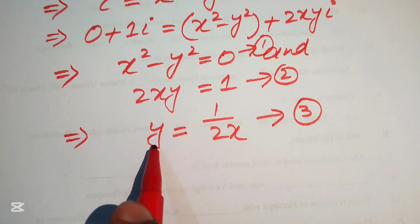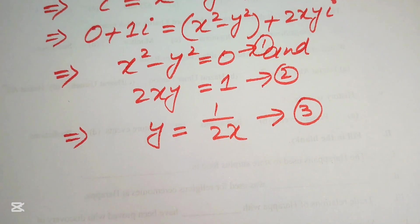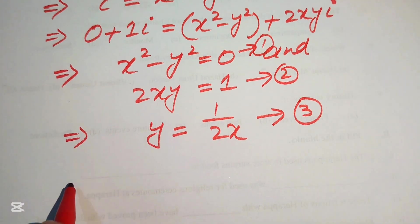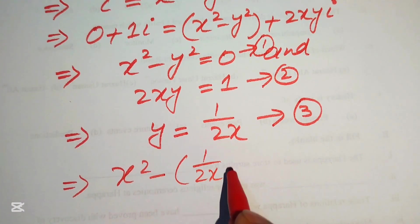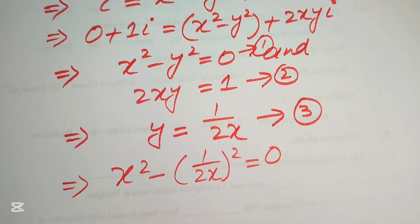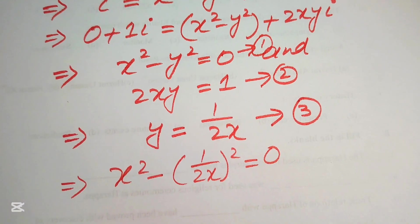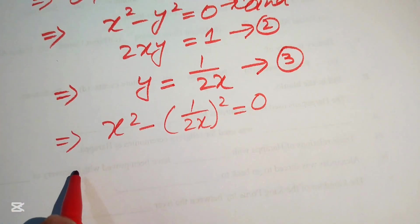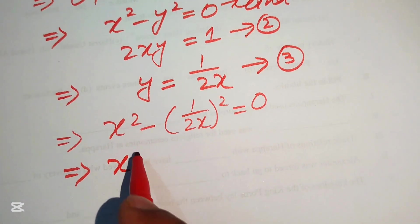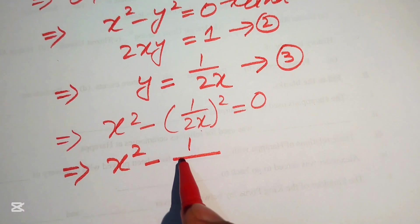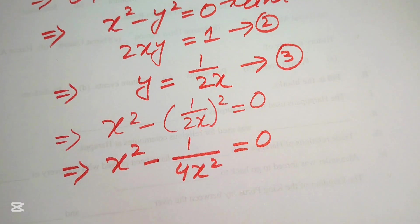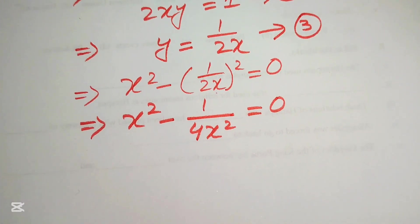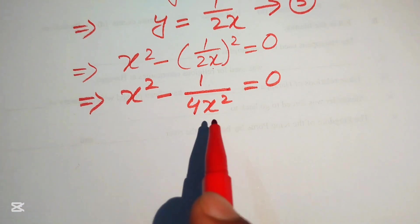Now we substitute y = 1/(2x) into equation one: x² - (1/(2x))² = 0. Expanding the square gives x² - 1/(4x²) = 0. To solve further, we multiply both sides by 4x².